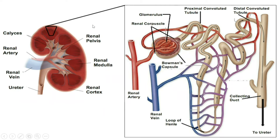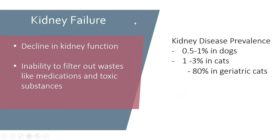Here is just a quick picture of the functional unit of the kidney, like the ones we went over yesterday. Kidney failure is not the inability to produce urine — however, it is the inability to produce a concentrated urine. The actual definition is a decline in kidney function and the inability to filter out wastes, such as medication and toxic substances in the body, which leads to them building up.